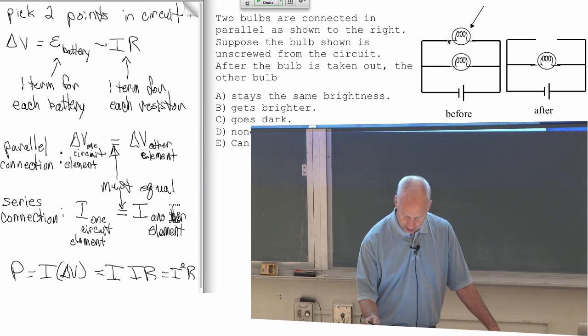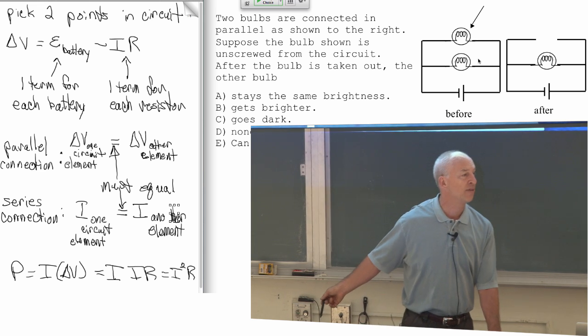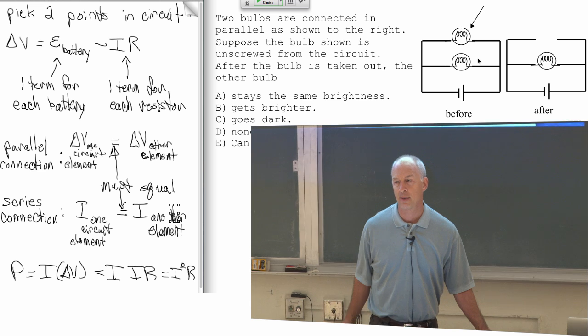Why would they have to be equal? Well, because I took a wire from one side, from the left side of one of them and I connected it to the left side of the other. So those two sides on the left have the same voltage. I took another wire and I connected the right side. So the right sides have the same voltage. So the voltage drop is the same.